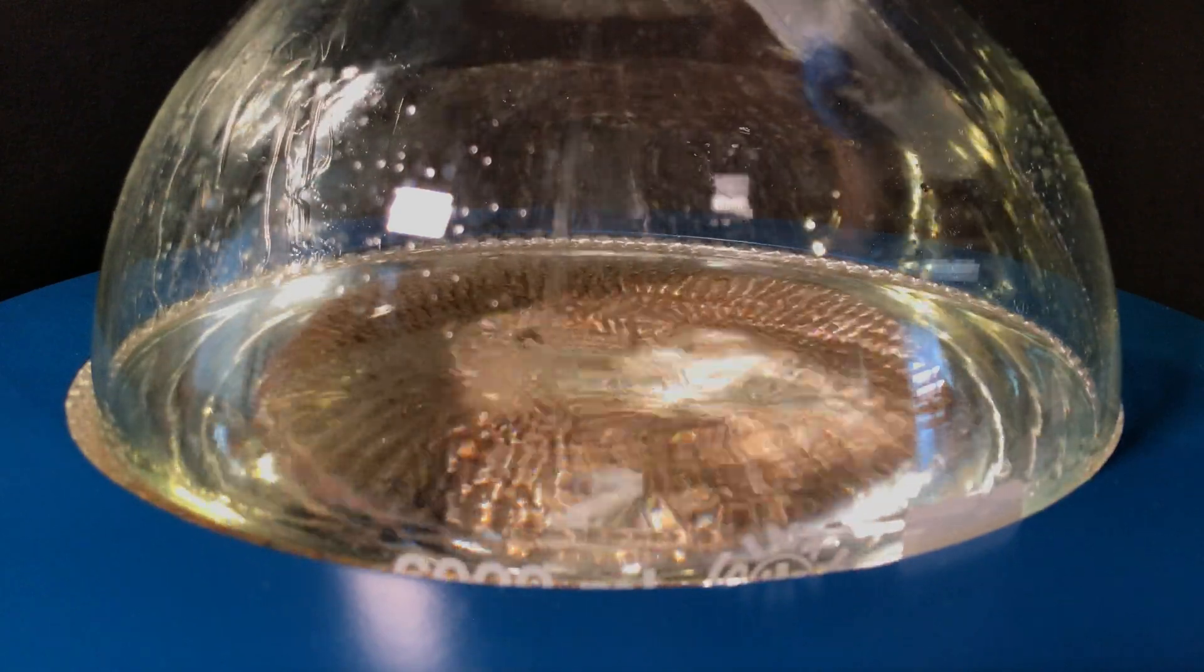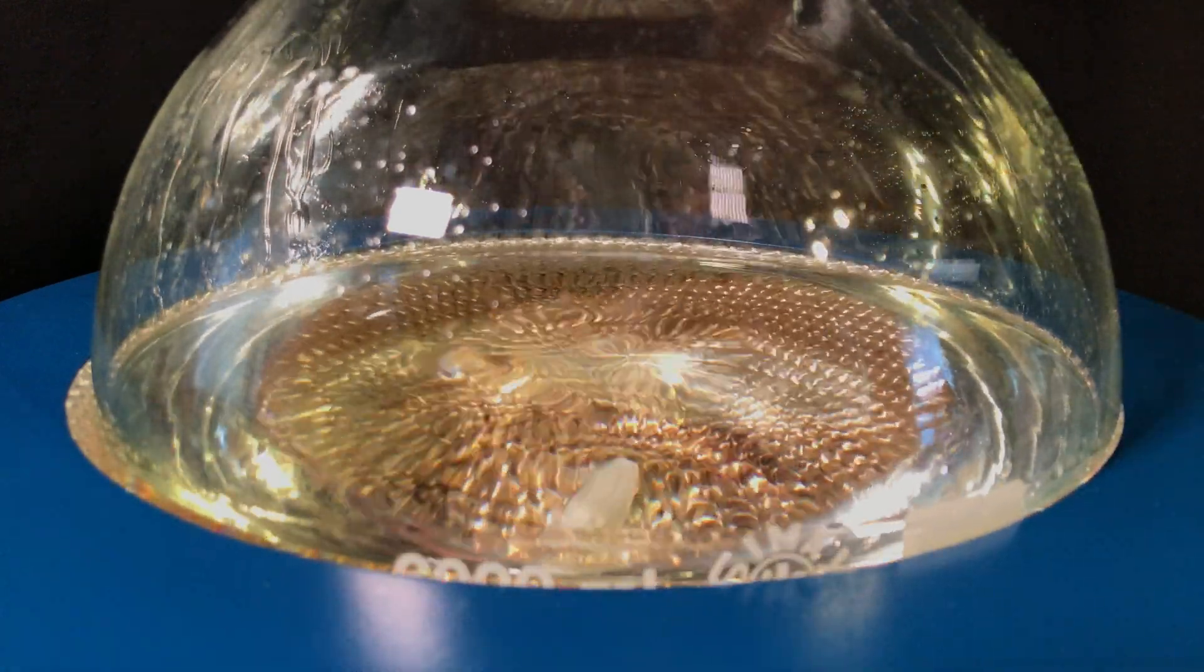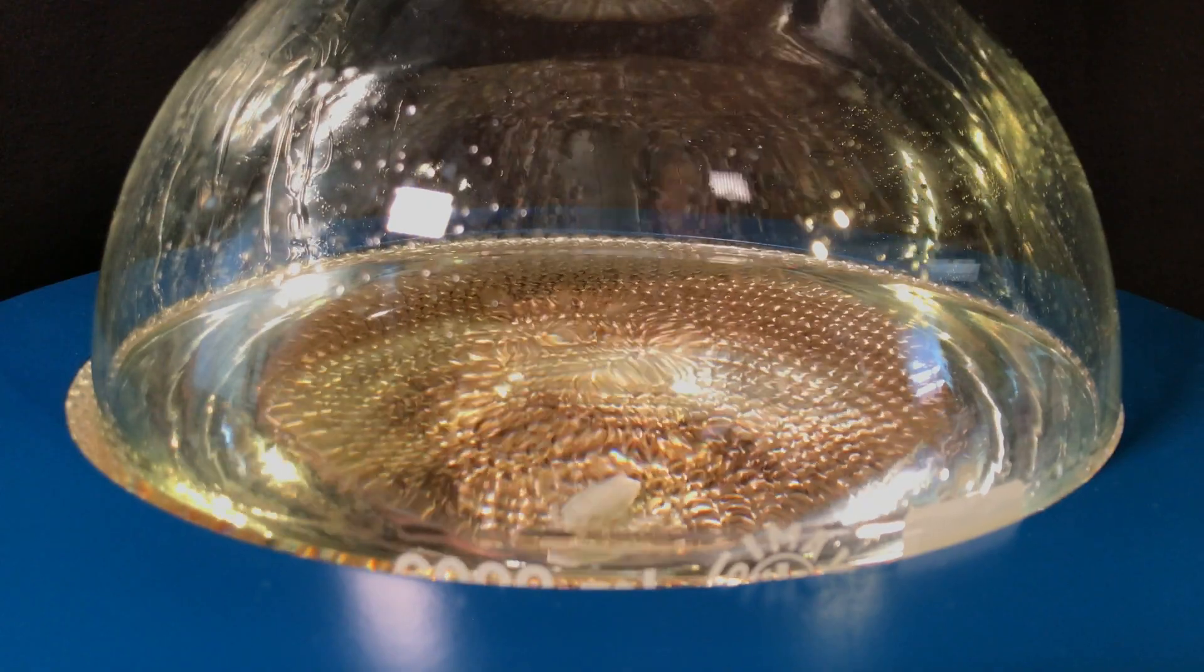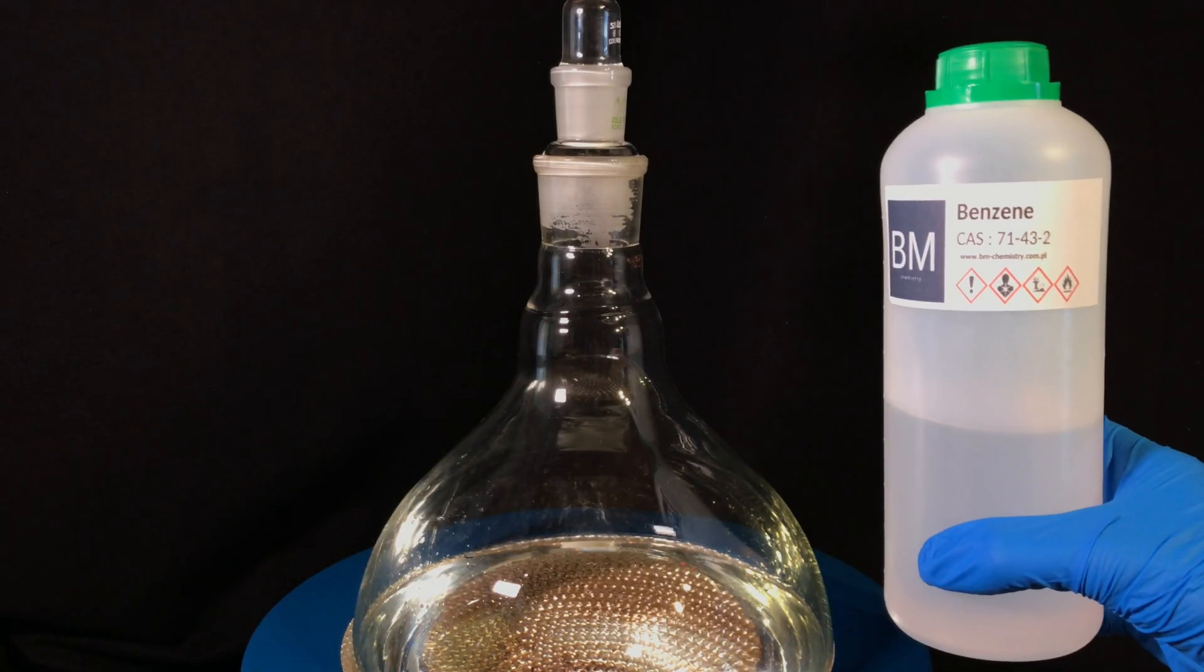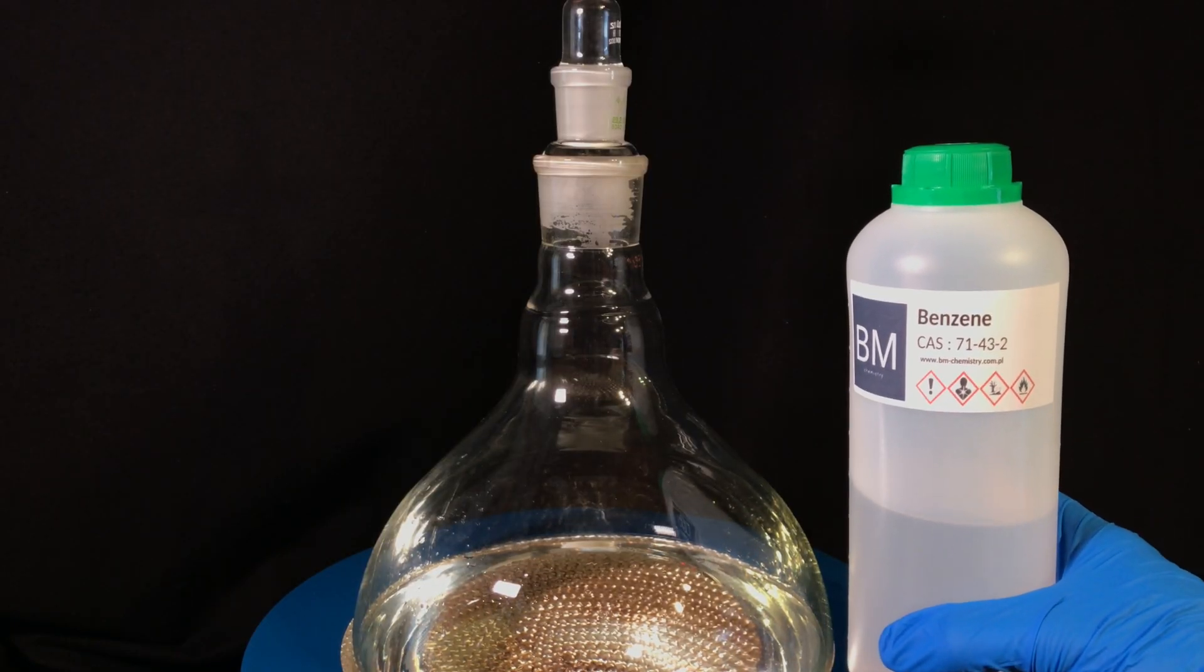So use more ethylene glycol than you think you need, and we ended up using 718g. The last liquid we're going to add before adding the catalyst is going to be benzene.